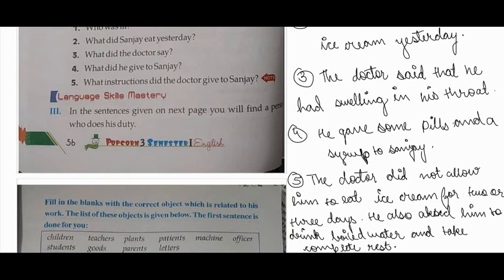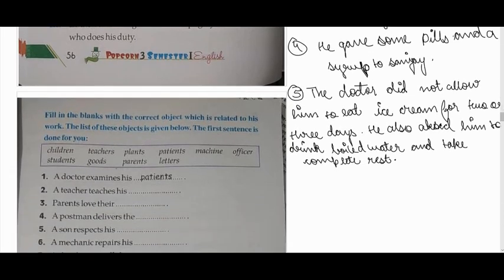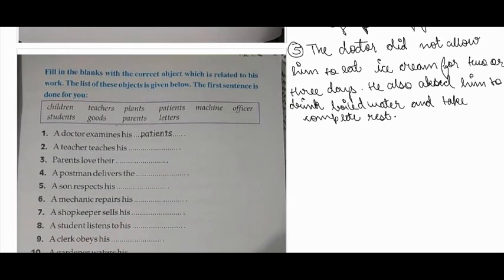This is all about your question and answer. Now come to language skills. Fill in the blanks with the correct object which is related to his work. The list of these objects is given below. The first sentence is done for you.